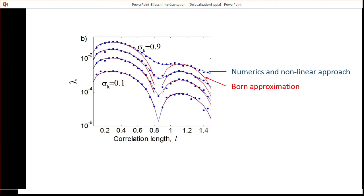To look at that as a function of correlation lengths, we also see that again the numerics and the non-linear approach, which is the blue line and the blue dots, match perfectly, while the Born approximation fails to describe the correct behavior.